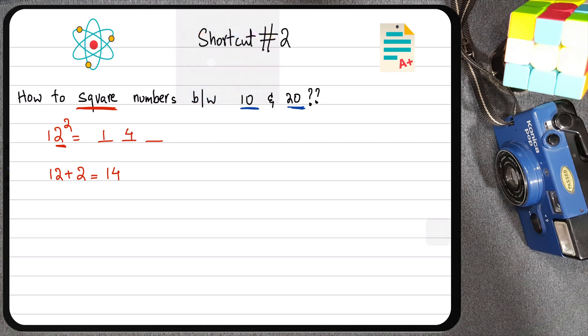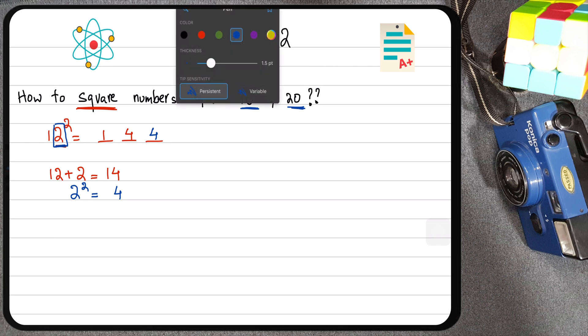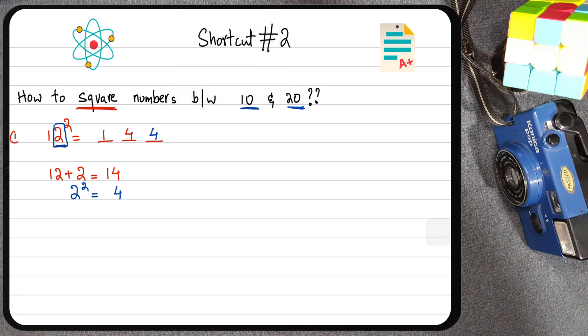And for the last digit, I want you to focus on what the last digit of the number that we're squaring is, which is 2. And then I want you to take the square of 2. The square of 2 is equal to 4. So that means 12 squared is going to be equal to 144. Confused? That's okay. Nothing to worry about. This is example 1. Let's do another example.